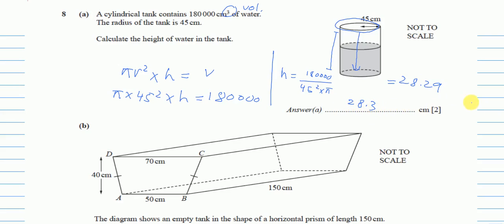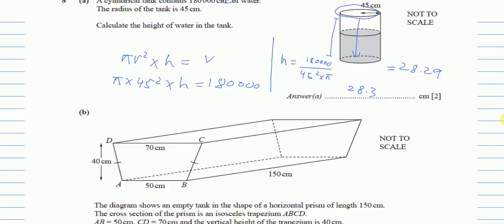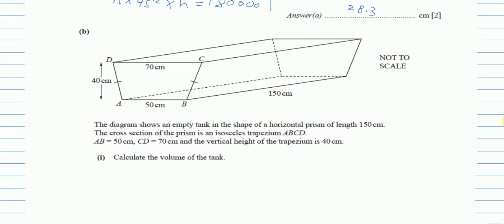Part B: the diagram shows an empty tank in the shape of a horizontal prism of length 150 centimeters. The cross-section is an isosceles trapezium ABCD where AB = 50 cm, CD = 70 cm, and the vertical height is 40 cm.